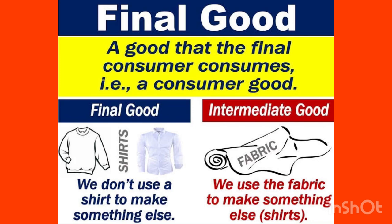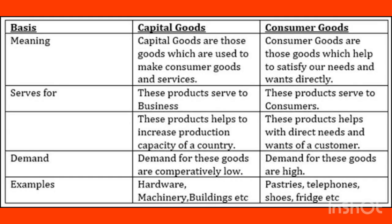Now let us review the types of goods: final goods, intermediate goods, consumer goods, capital goods, depreciation, and inventory. Final goods are goods which are meant for final use — for example, clothes and food that we consume directly. This is called final consumption.